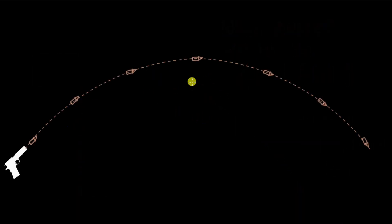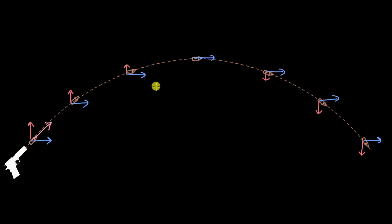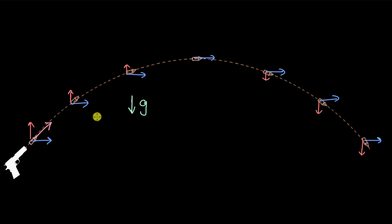In projectile motion, the velocity can be resolved into two components: a vertical component and a horizontal component. The vertical component keeps decreasing, becomes zero at the topmost point, then keeps increasing as it goes down. The horizontal component stays the same because there is acceleration due to gravity only in the downward direction, changing only the vertical component. There is no acceleration in the horizontal direction.